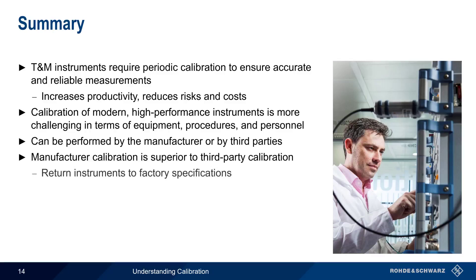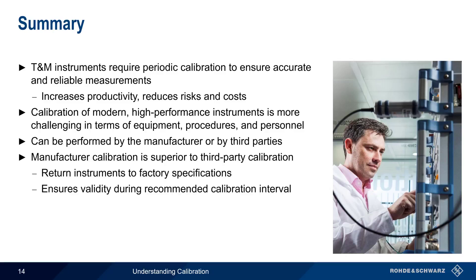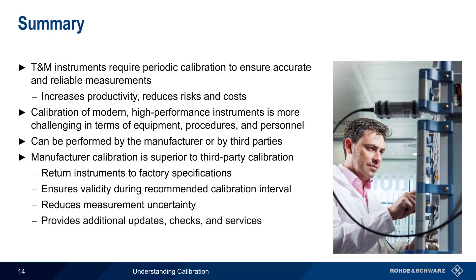A manufacturer calibration returns the instrument to factory specifications, with alignments performed even when values are within the nominally acceptable range. This ensures that the instrument remains in-cal and provides valid results during the recommended calibration interval. The higher quality and more comprehensive calibration procedures used by the manufacturer reduce measurement uncertainty and provide greater confidence in measured results. Manufacturers also typically provide many additional checks and services, such as firmware updates and preventative maintenance, during the calibration process.